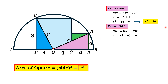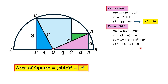Applying the Pythagorean theorem to triangle ORD: OD² = OR² + RD², giving R² = (4+A)² + A². Substituting R² = 80 and expanding (4+A)² gives 16 + 8A + A², so 80 = 16 + 8A + A² + A². Simplifying this equation, we get 2A² + 8A − 64 = 0, and dividing by 2: A² + 4A − 32 = 0.